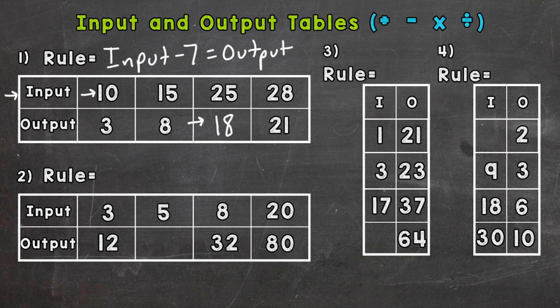How do we get 3 to equal 12? Well, we can add 9. Let's see if it works for the rest. 8 plus 9 is not 32, and 20 plus 9 is not 80, so adding 9 is not our rule. Never just check the first one and think that rule applies for the whole table. Make sure it applies for all of your corresponding or matching terms.